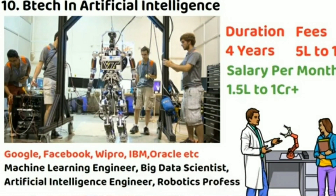The 10th branch is B.Tech in Artificial Intelligence. It is also a sub-branch of Computer Science Engineering, with a 4-year duration. Fees depend on the college: 5 to 10 lakhs. Salary per month is 1.5 lakhs to 1 crore, requiring heavy skills. Top companies include Google, Facebook, Wipro, IBM, and Oracle — product-based companies. Job roles include machine learning engineer, data scientist, AI and robotics professor, and robotics software and data training specialist.